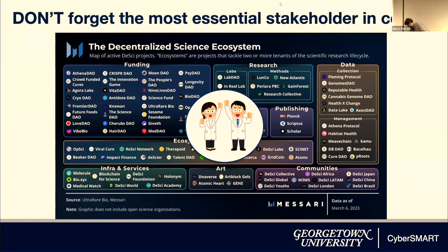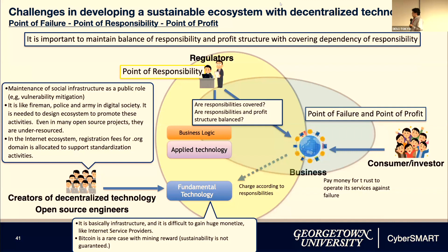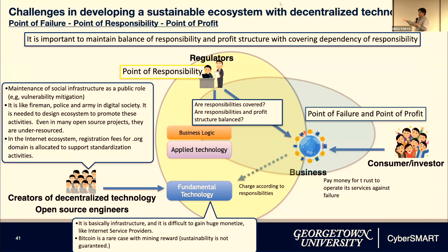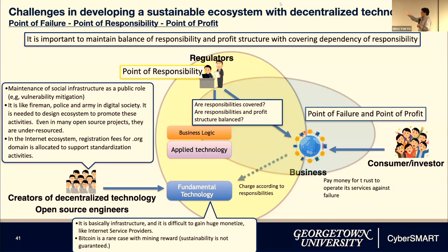This slide is from a presentation to a JFSA research group. We have different types of humans: regulators, engineers, scientists, consumers, and business entities. That chaos map only wrote business entities, which are a point of failure and point of profit — fine. But regulators and government people are points of responsibility: if a crypto exchange fails, JFSA people work hard to secure customers' money. We need to create a clever ecosystem design — like the dot-org registration fee for internet governance — balancing the point of failure, point of responsibility, and point of profit.